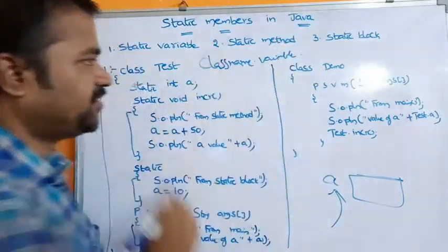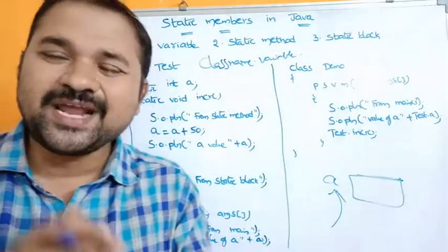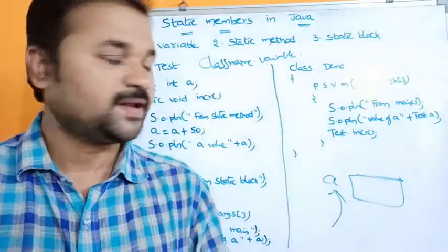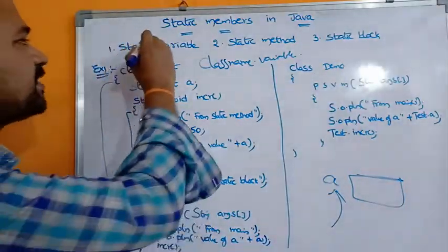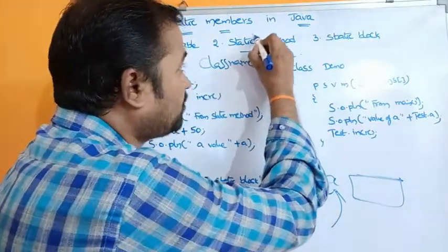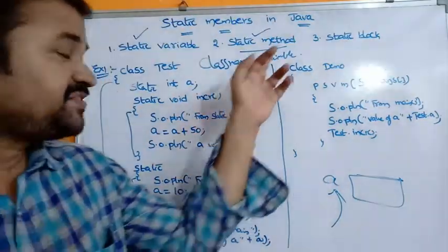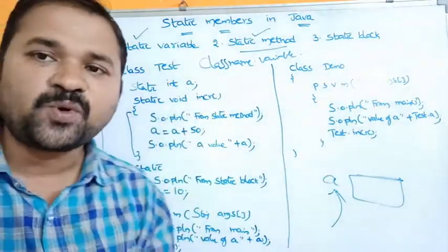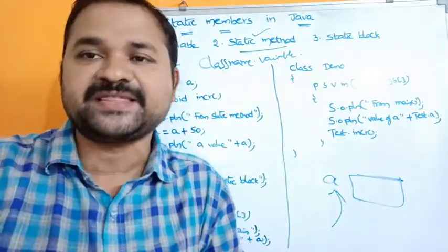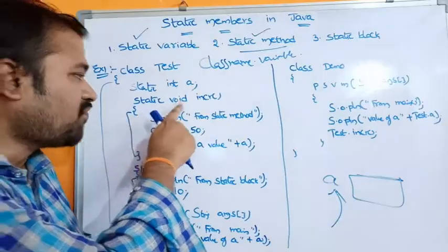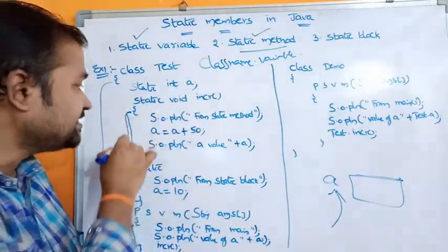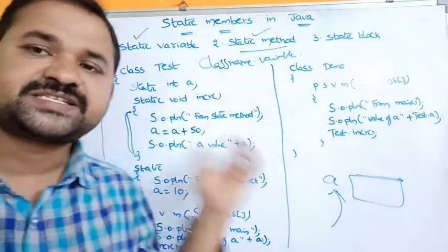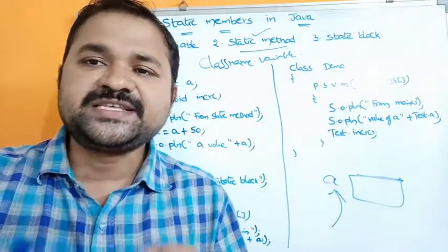With the help of an object we can also access the static variable. Now let's see about static method. If a method is defined with the keyword static then it is called a static method — for example, static void incr. This method declaration starts with the keyword static.